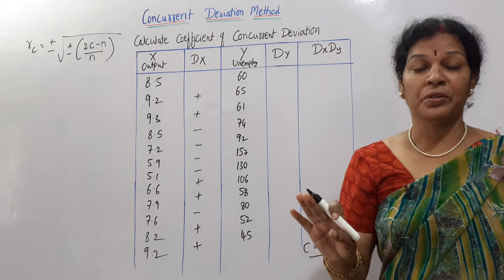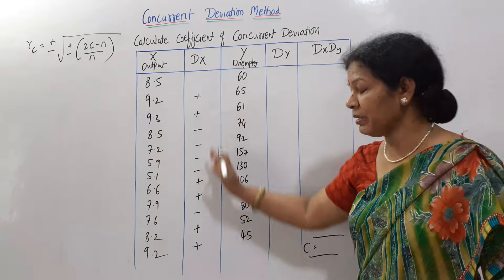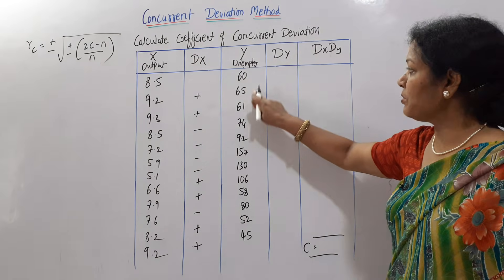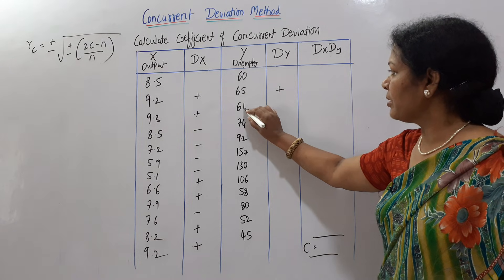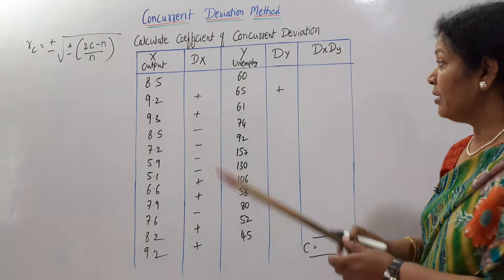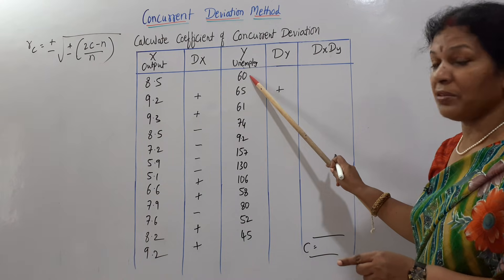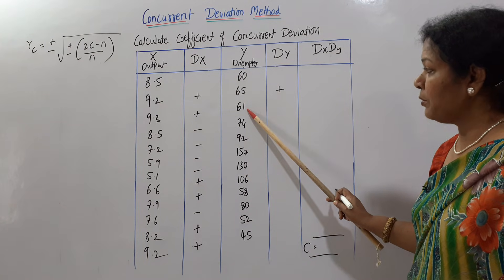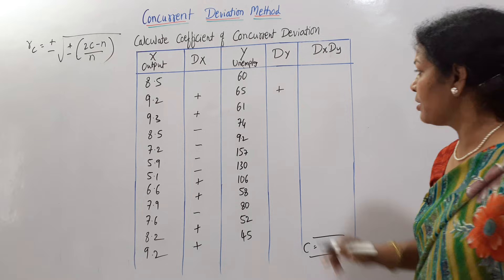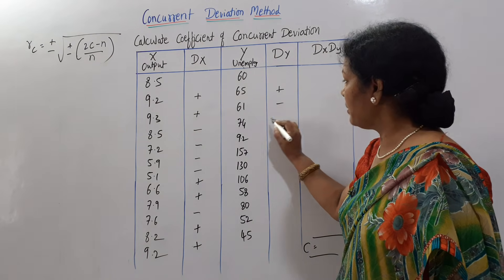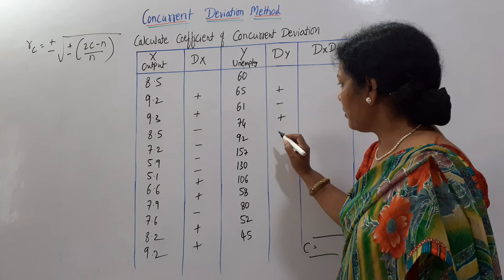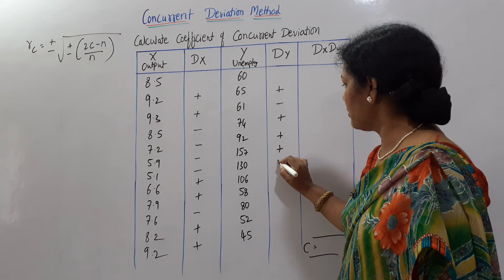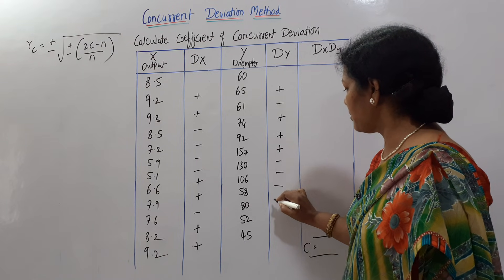The first number is the base — we do not put any sign for it. With that base we assign all plus or minus signs to subsequent numbers. Similarly for dy: 60 is the base. Compared to 60, 65 is more, so plus. Always remember we are comparing each number with the next number only. Compared to 65, 61 is less, so minus. Then 61 to 74: plus. Continuing: more gives plus, less gives minus — giving plus, plus, minus, minus, minus, plus.